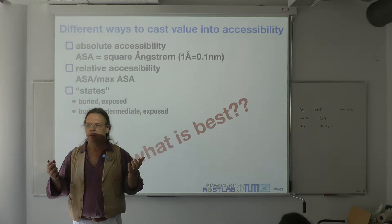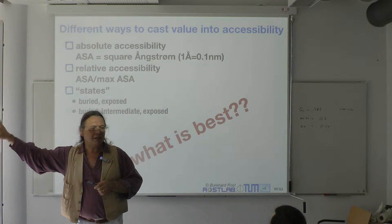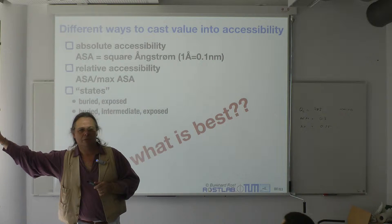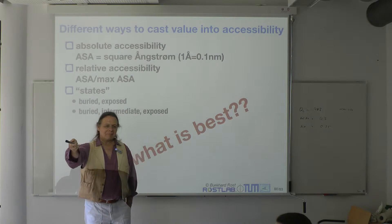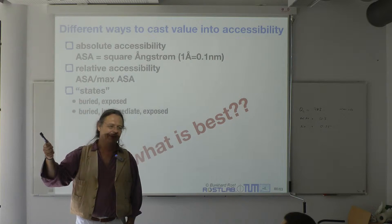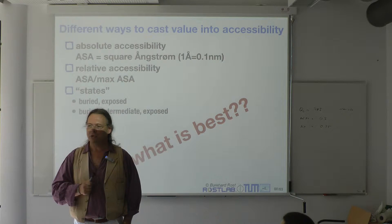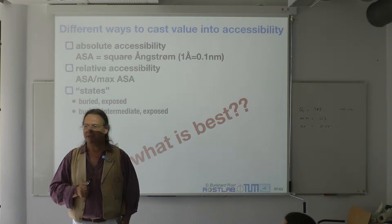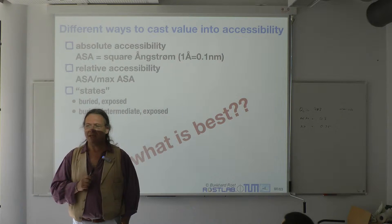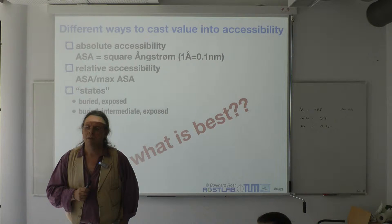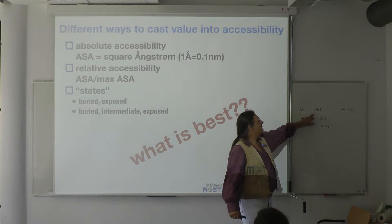You could look at proteins with similar structures — take the known structures and really look at where your predictions are right. 70% right means 30% wrong. Where do the right ones and the wrong ones fall? Do you always make mistakes on the surface, or on the inside? You need structures for which you know the answer in order to know it is 70% right — you only know the answer when you have a 3D structure.